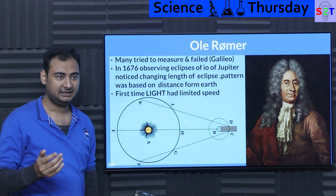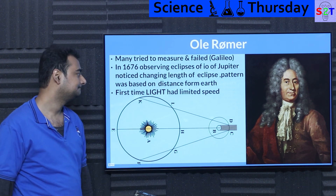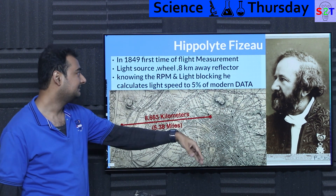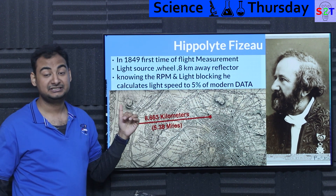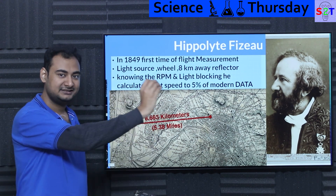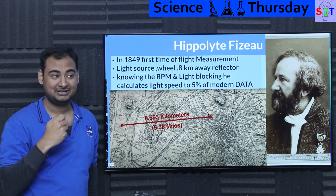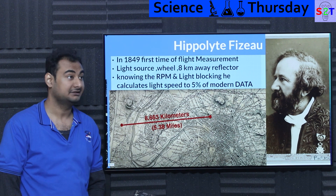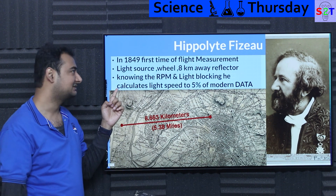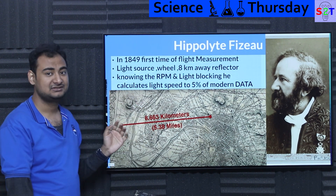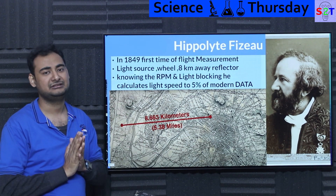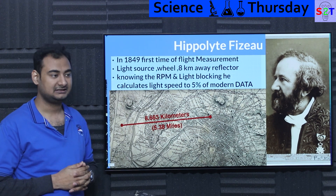We were getting closer to the true value. Then comes Fizeau — I apologize, I can't quite pronounce his name — who in 1849 did something unimaginable: a time-of-flight measurement. The idea was to launch light, wait for it to come back, and time it. That sounds ludicrously complicated, and it absolutely is — especially in 1849 when the best clocks were pendulum clocks and all equipment was purely mechanical.